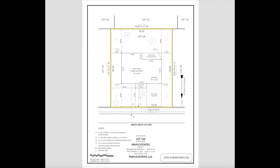So how do we read a property survey? Today I'm going to go over an example of a survey for a single-family new construction house. The survey will usually include an area with basic information about the property, such as the lot number, the subdivision name, the phase number, the city and state the property is located in, and the date the survey was performed. It may also include a legend that helps explain what certain markings on the drawing represent.